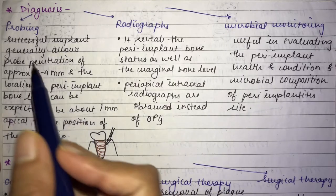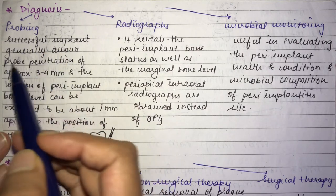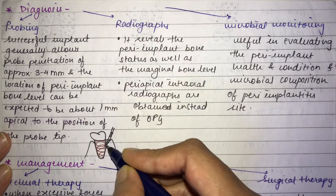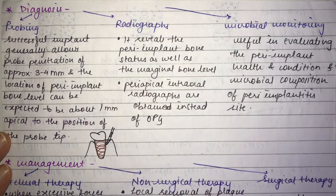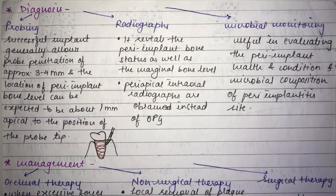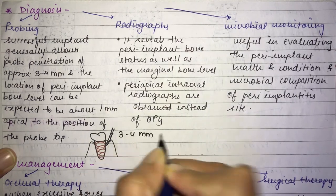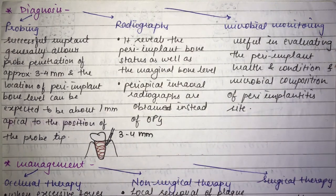In probing, a successful implant generally allows probe penetration of approximately 3 to 4 mm, and the peri-implant bone level is expected to be about 1 mm apical to the probe tip. If the probing depth is increased beyond this, peri-implantitis can be diagnosed.